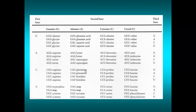For example, if we take the codon G, C, G on our mRNA, looking at the table with first base G, second base C, third base G — that codes for alanine. Notice also that G, C, A codes for alanine, as does G, C, C and G, C, U. That is what we mean by degenerate: there is more than one codon for a particular amino acid.